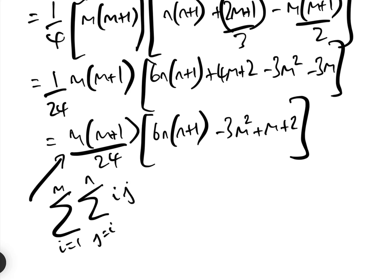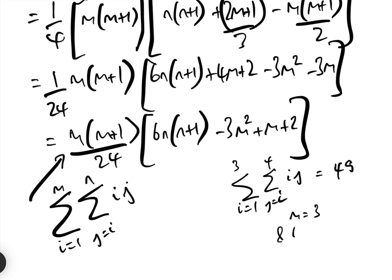Now let's just check. When we did the question earlier, the sum between i equals 1 and 3, j equals i and 4, of i times j, we found that was equal to 49. So if we put m equals 3 and n equals 4 into this formula, we had better get 49.